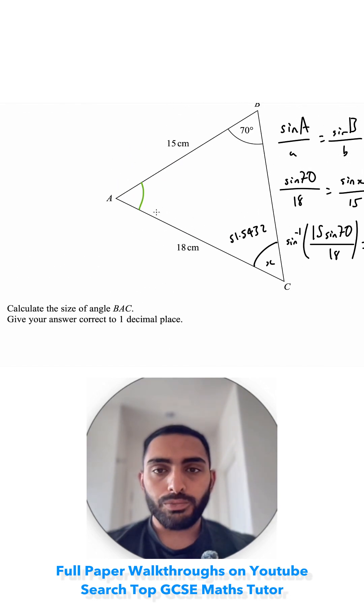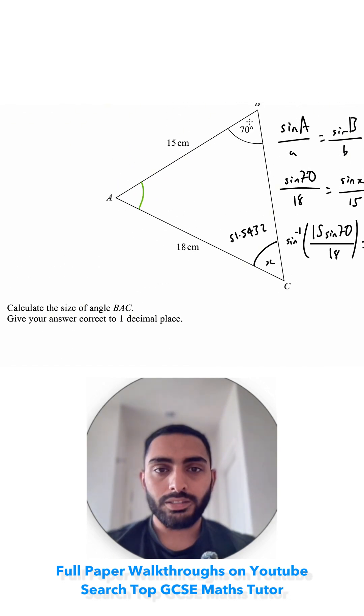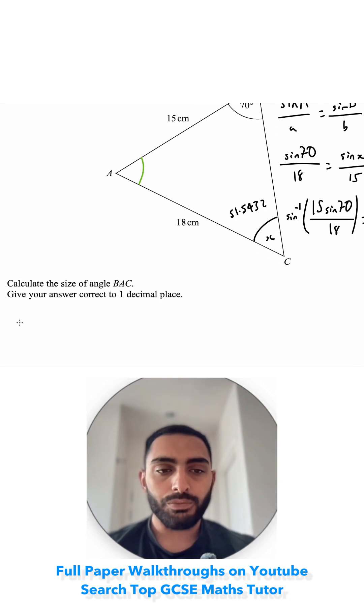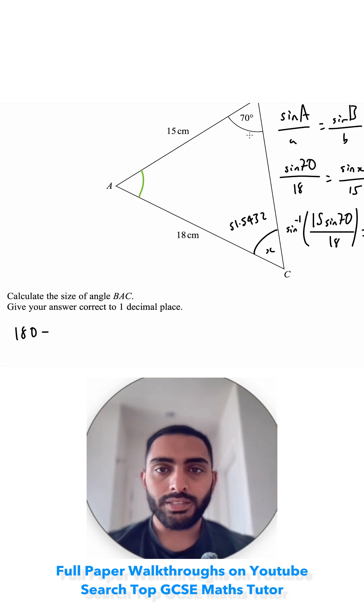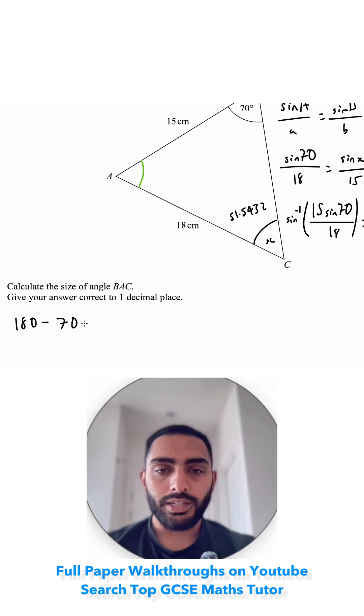I want to find this angle, so I need to use my angles in a triangle fact. All of these will add up to 180. I just need to do 180 take away 70, take away my previous answer. That will give me the angle I'm trying to find.